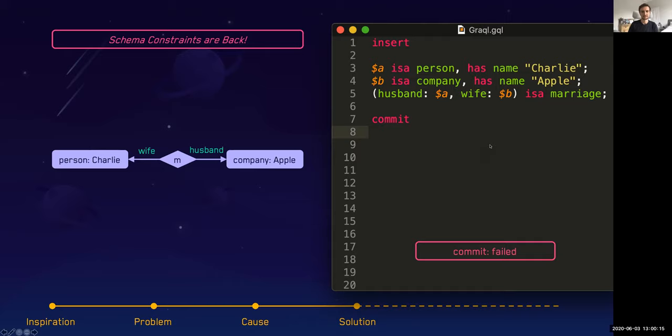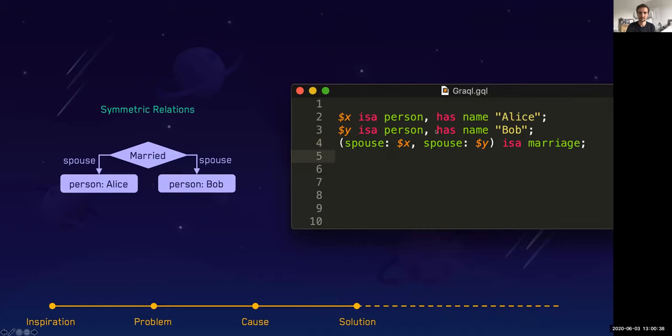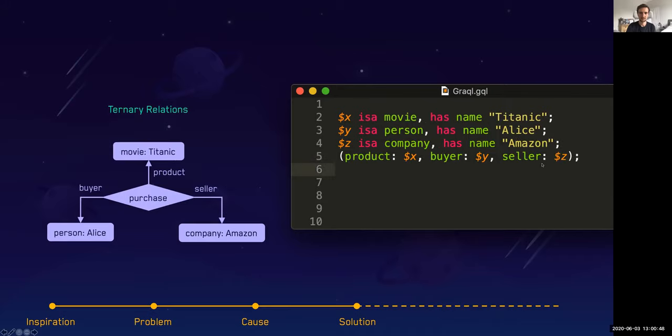To give some examples of how you would model some of the relations I mentioned before, just to show you how you go about modeling these things. If we have a reflexive relation, Alice teaches herself—we simply have two different role players played by the same person dollar X in a teacher's relation. We can have a symmetric relation where we've got two different people playing the same role in a marriage. Alice plays the role of spouse, Bob plays the role of spouse in a marriage relation.